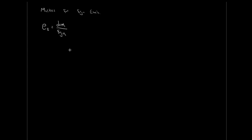We live in a US-centric world and often you see exchange rates presented as how many US dollars is one Canadian dollar — something like 0.87 right now. But if we want to express it our way, that would be how many Canadian dollars does it take to buy one US dollar — about 1.15. It's a bit of a different way to look at it.